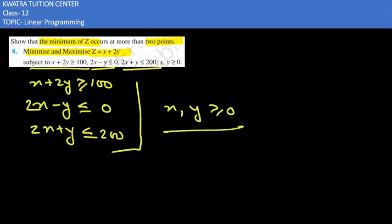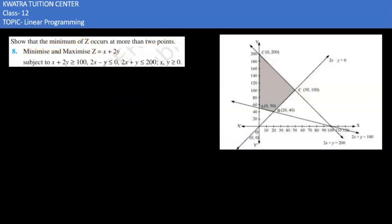With the help of these three constraints, first we will plot our graph. Here is the graph which is plotted for three pairs of constraints: first, second, and third. This is our feasible region in between these three lines and now we can obtain our corner points.